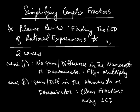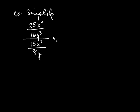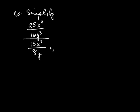That's why I want you to review the video Finding the LCD of Rational Expressions prior to what we're doing now. Let's see examples of these two cases. First, let's simplify this complex fraction. A complex fraction is one where there's a fraction in either the numerator or the denominator — in this case, both. This is Case 1 because there's no sum or difference in the numerator or the denominator — no addition sign or subtraction in either.